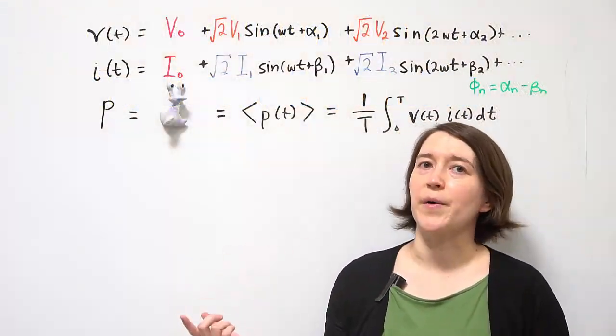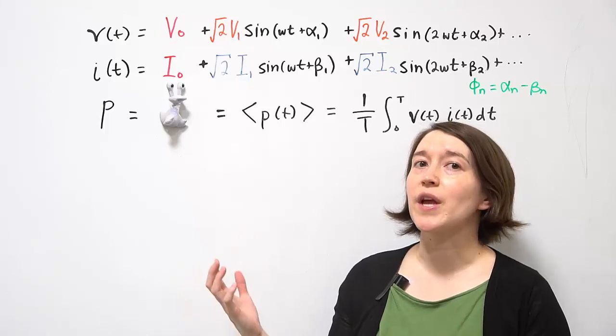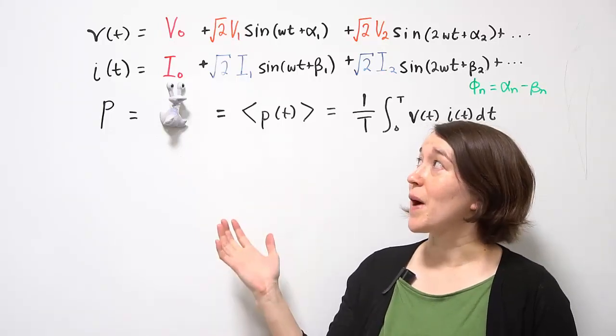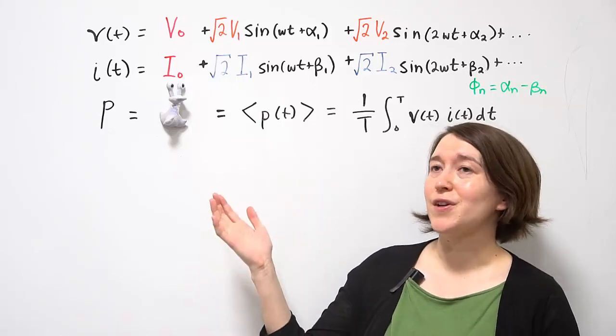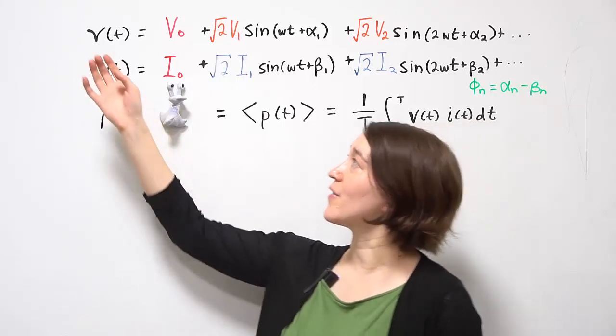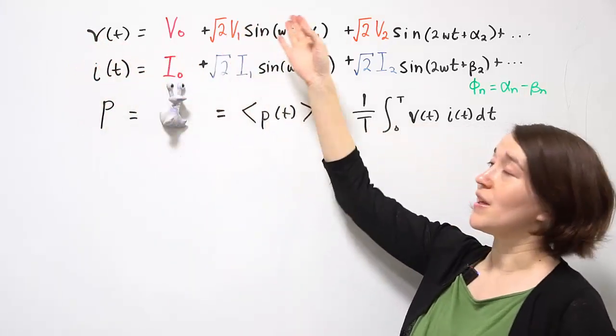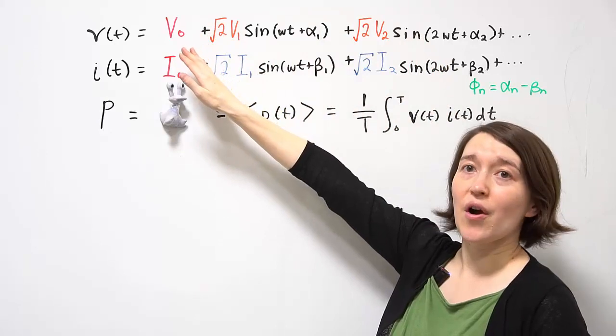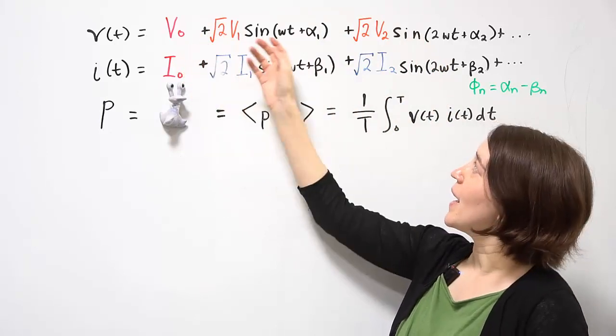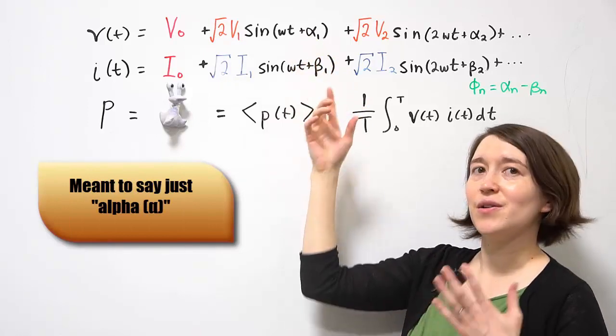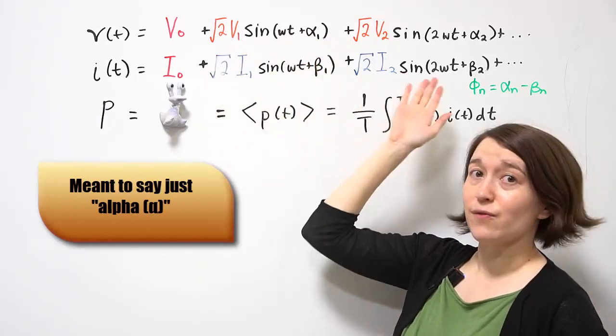Now we're talking about real power based on the Fourier series expansion terms. For real power we need voltage and current. So we have our voltage waveform and we can write it out in the Fourier series expansion using the RMS terms here. And for the phase shift we're actually changing it to alpha 1 for the voltage.